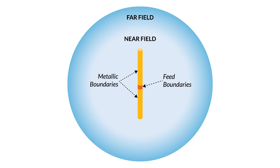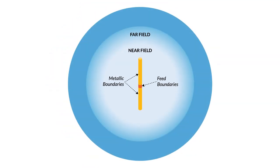In the near-field region, the fields have both an evanescent and a propagating component, while in the far-field region the electromagnetic fields are purely propagating. Inside the model, near field and far field will all be modeled as a single domain. There will also be an additional absorbing region called a perfectly matched layer, or PML domain, which acts like the walls of an anechoic chamber, absorbing any outgoing radiation. We want to compute the electromagnetic fields, the far-field pattern, and the antenna impedance.